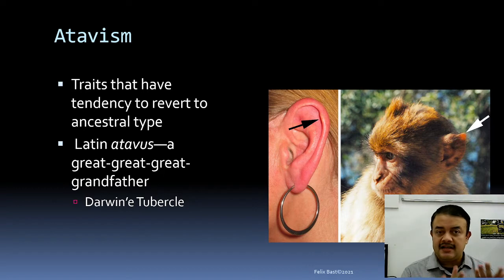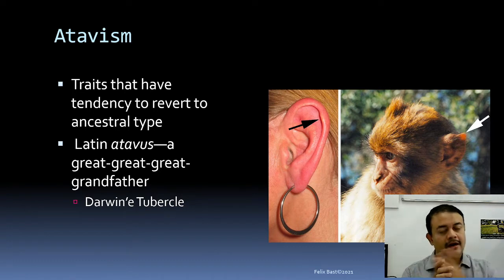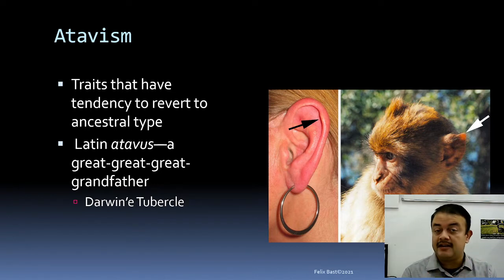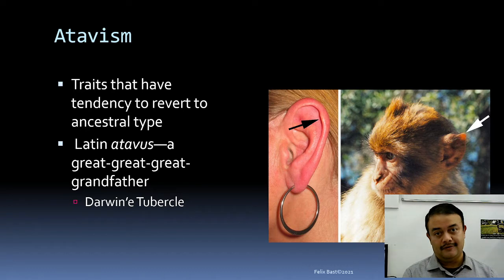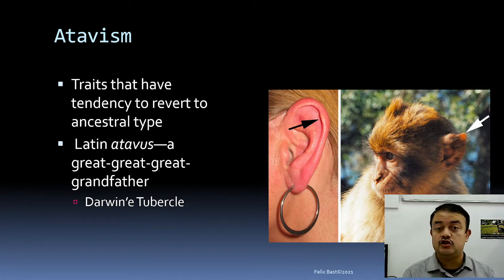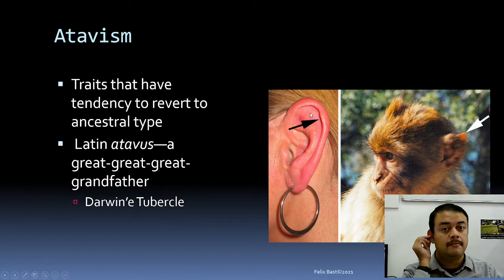Atavism is the tendency of traits to revert back to an ancestral type — a kind of back mutation. The word comes from the Latin 'atavus,' meaning a great-great-great-grandfather, four generations back. Atavism explains vestigial structures like Darwin's tubercle, the small projection found on the pinna of the human ear.